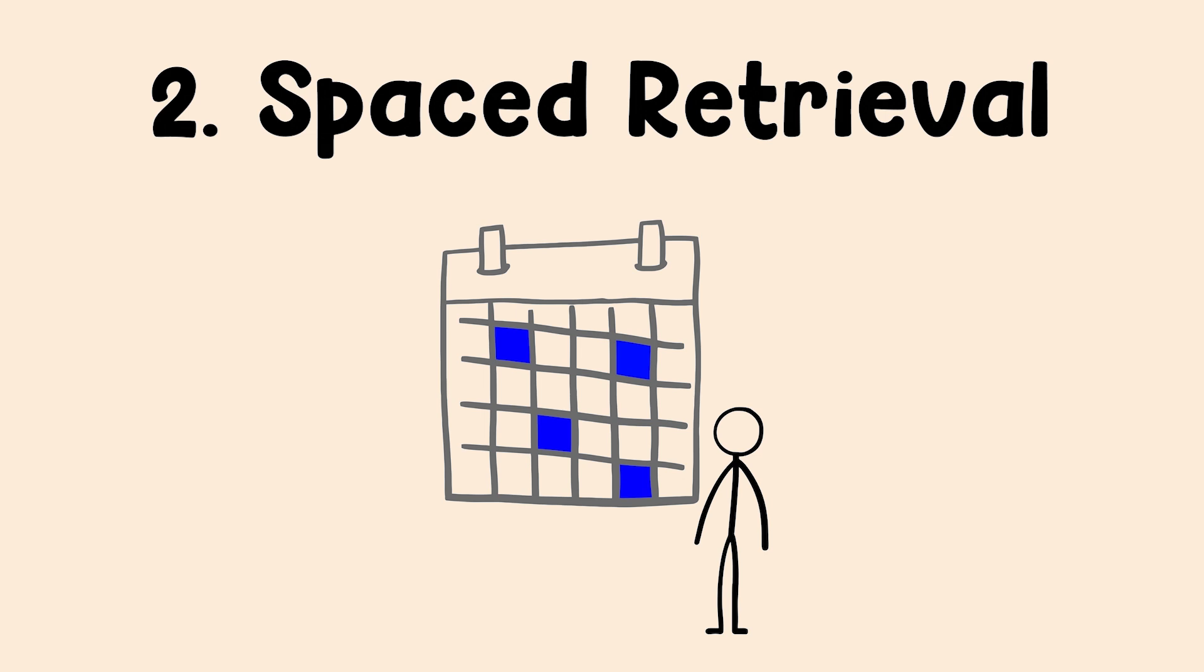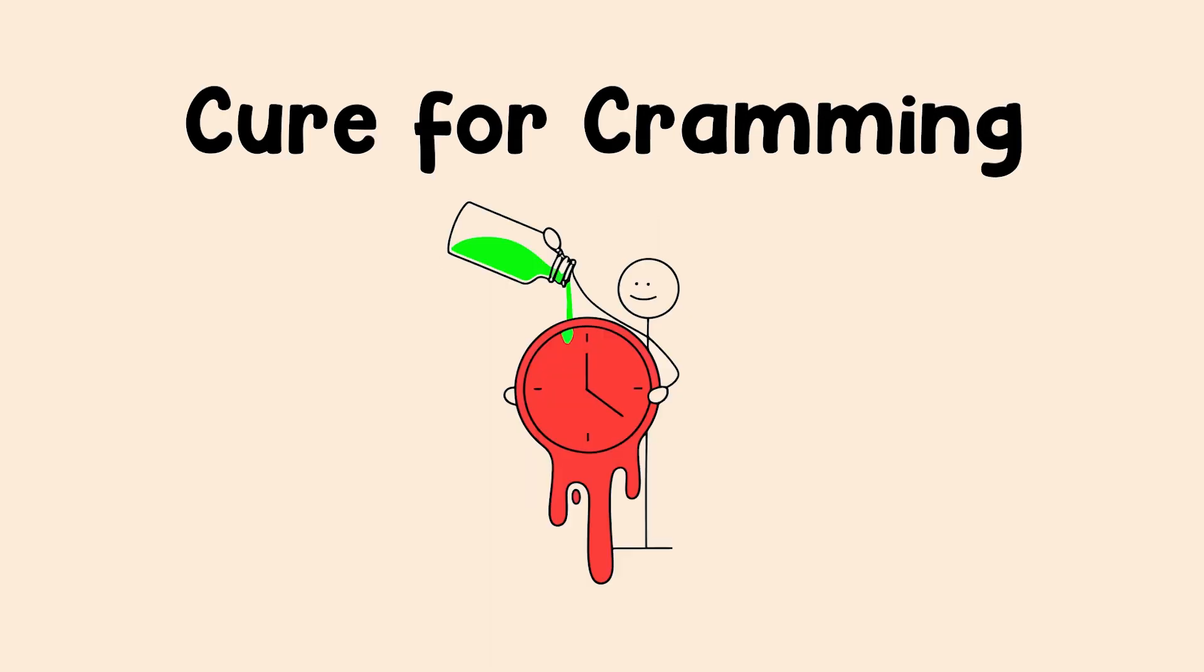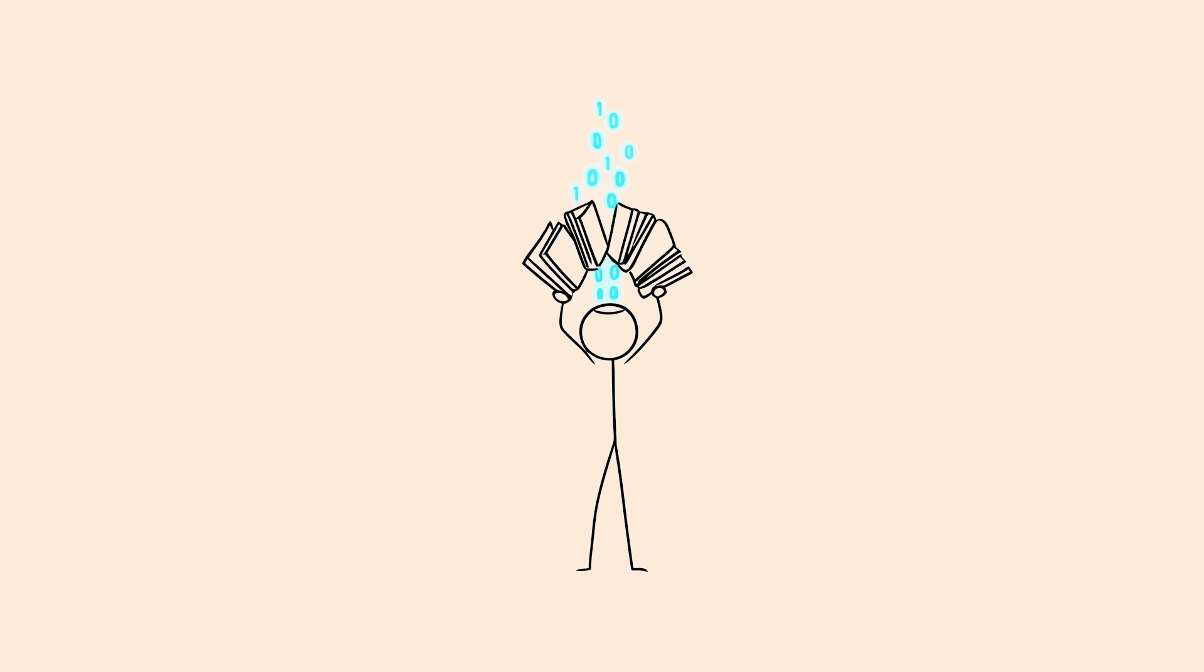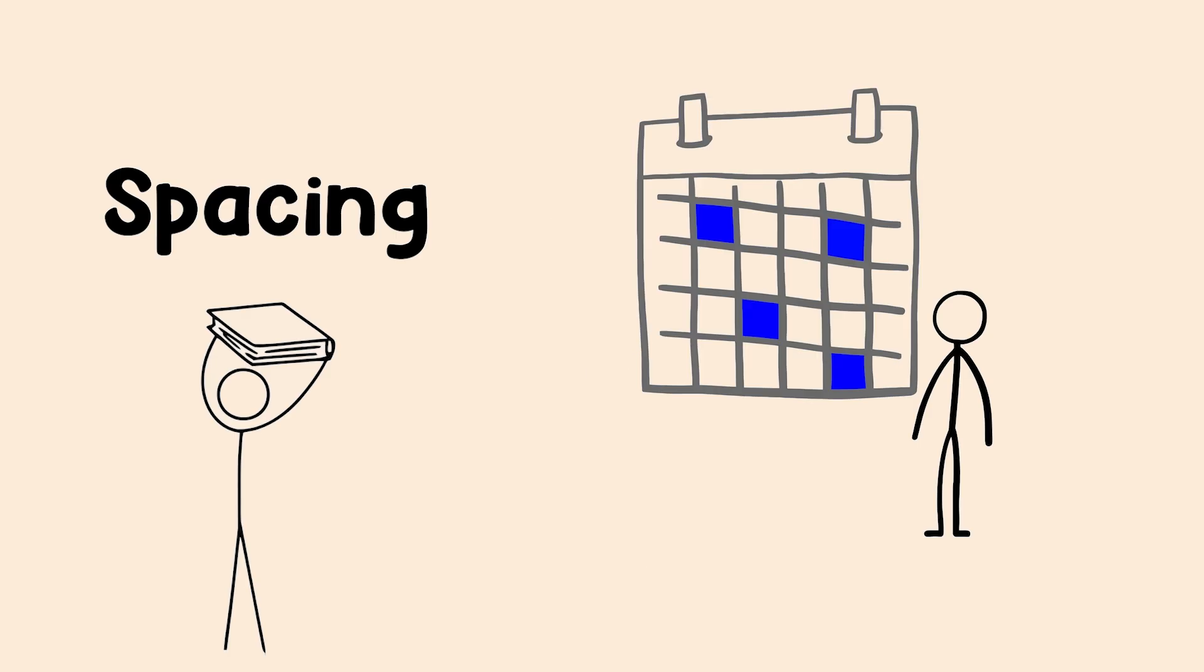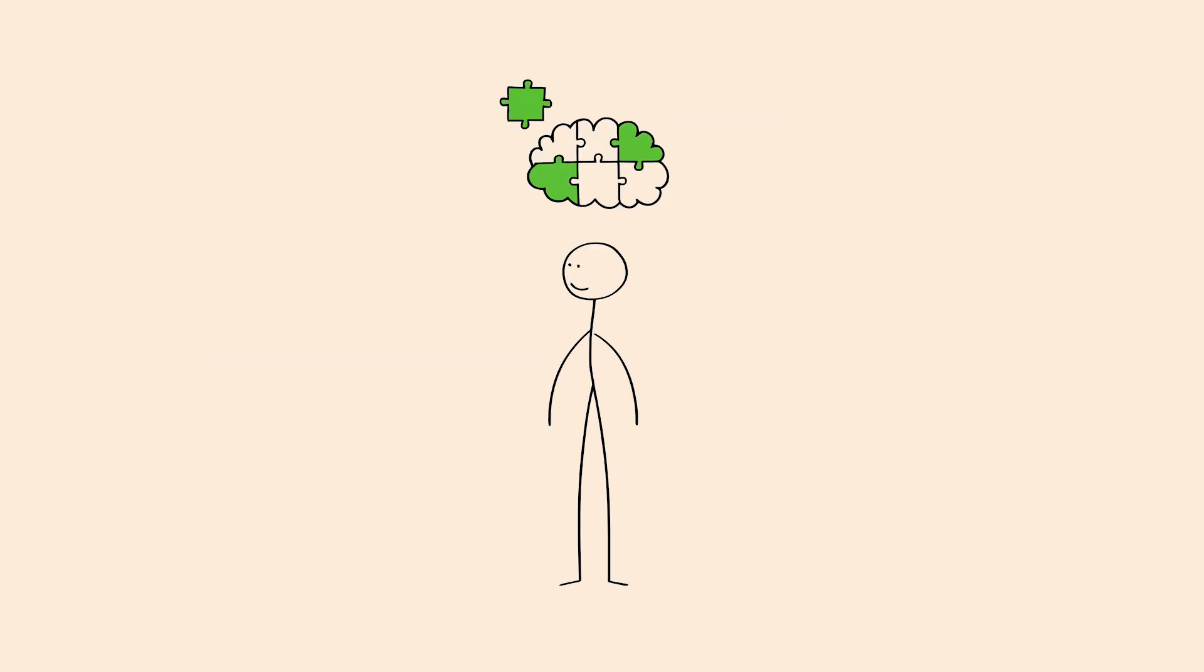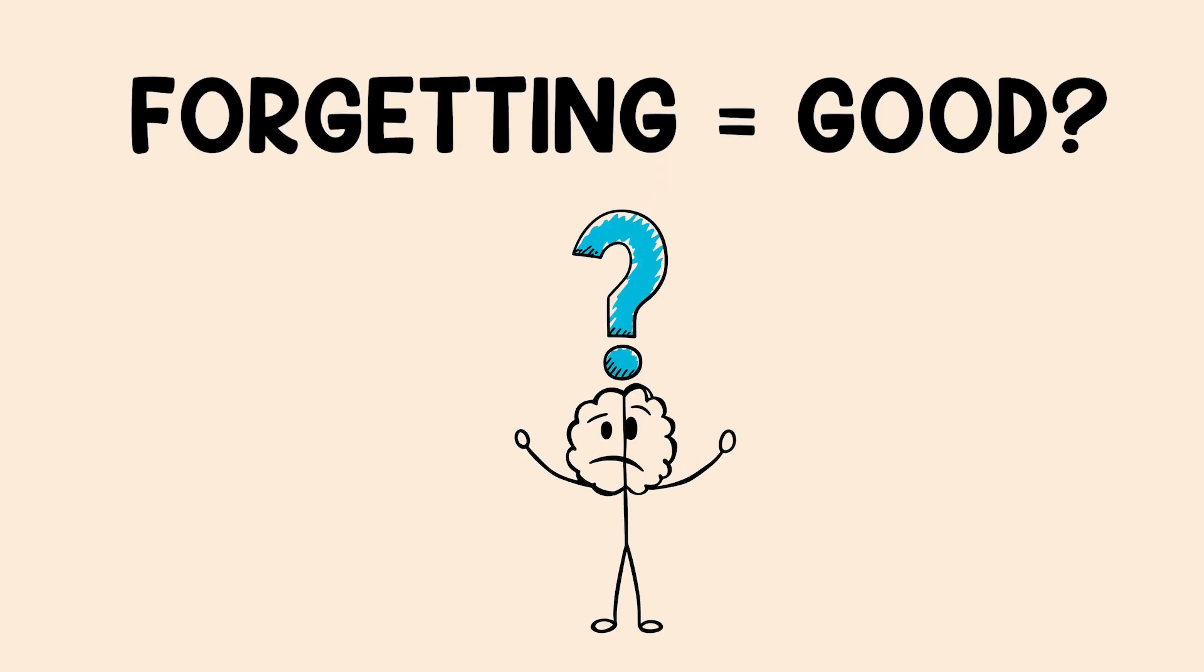The second part of the system is spaced retrieval. This is the cure for cramming. Cramming feels good, but it's like binge eating for your brain. It all comes out right after the test. Spacing is the opposite. It works by strategically letting yourself forget a little bit. That sounds weird, right?